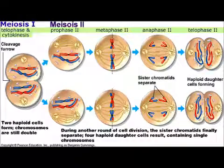In prophase II, the nuclear envelope disappears and the spindle develops. There are no chiasmata and no crossing over, as in prophase I. In metaphase II, the chromosomes align singly on the metaphase plate and not in tetrads as in metaphase I.